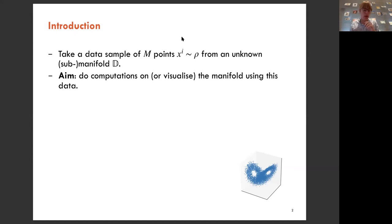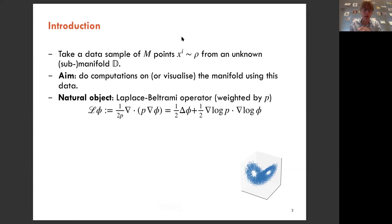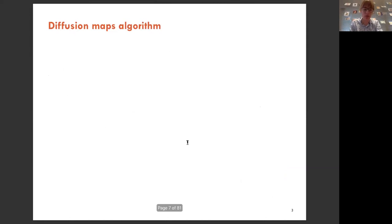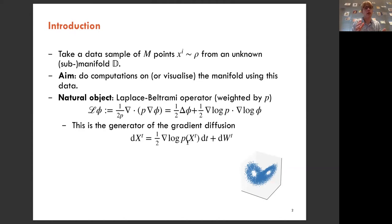We want to do everything in a way that's independent of the embedding, or at least independent of how the embedding works globally — built from local information. The good way to do that is by considering a Laplacian on the manifold, or more generally a Laplace-Beltrami operator, which we'll allow to potentially be weighted by some function p. With a one-half normalization (making it SDE-ish), it looks like a diffusion on the manifold plus a drift term that pushes you in the direction of higher p.